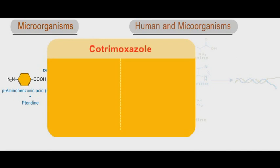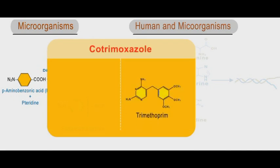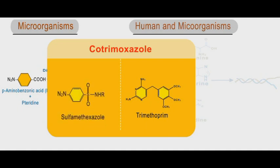Cotrimoxazole is a combined antibiotic of both trimethoprim and sulfamethoxazole sulfonamide. Therefore, it provides collateral damage to bacterial folic acid synthesis and metabolism.